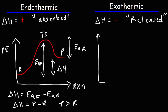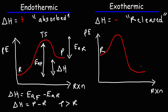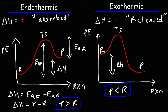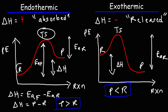For an exothermic reaction, the energy of the reactants will be greater than the energy of the products — the products are lower in energy than the reactants. Delta H is still the difference between the energy of the products and the energy of the reactants, but for an exothermic reaction the products are lower in energy, whereas in an endothermic reaction the products are higher in energy. The same formula still applies: delta H equals products minus reactants. The forward activation energy is still the difference between the transition state and the reactants — that's the same for both endothermic and exothermic reactions.